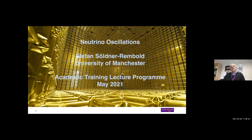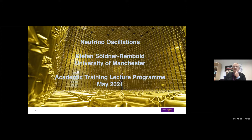The title of the lectures is 'Neutrinos at Accelerators,' or slightly renamed, 'Neutrino Oscillations.' I will mainly be talking about neutrinos at accelerators in the second and third lectures. Today I'll use the first lecture just to introduce neutrino oscillations, to set the stage of what we want to look at, and to introduce neutrinos in general. I know of course that people at CERN know very well what neutrinos are.